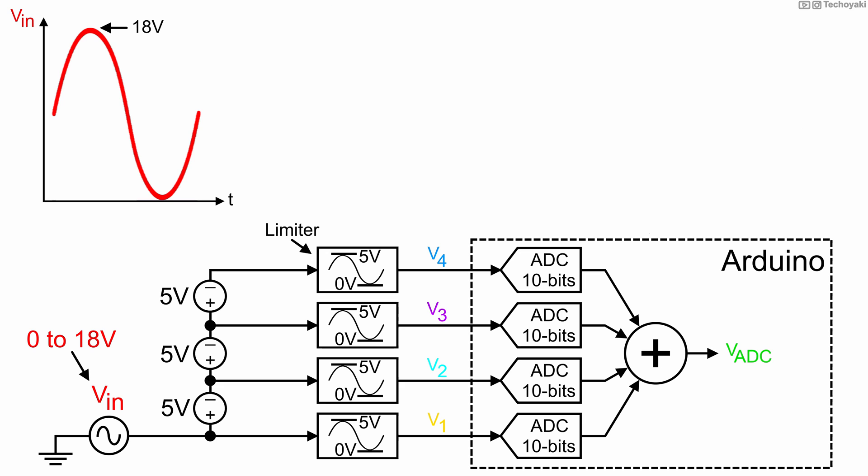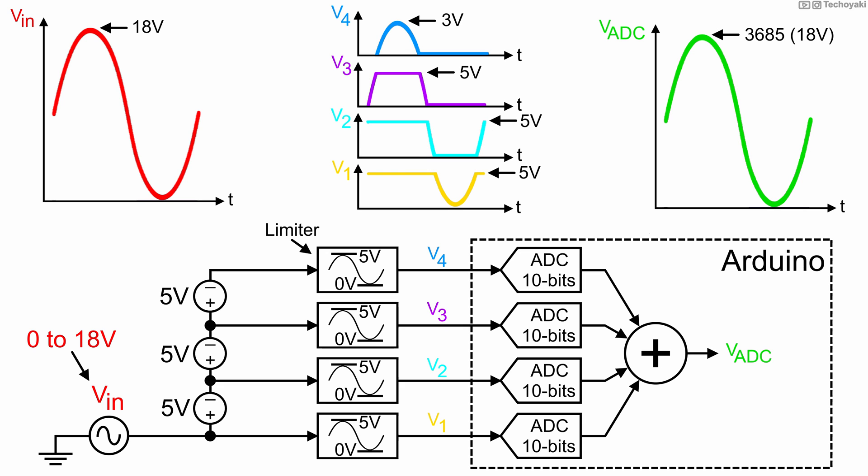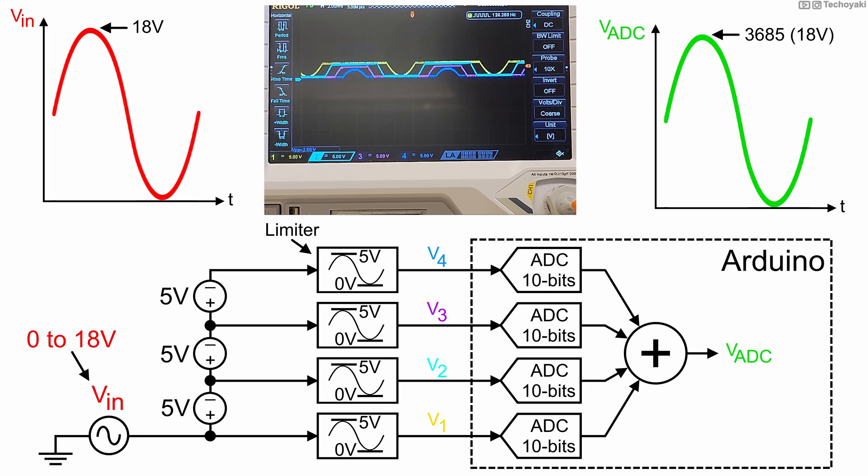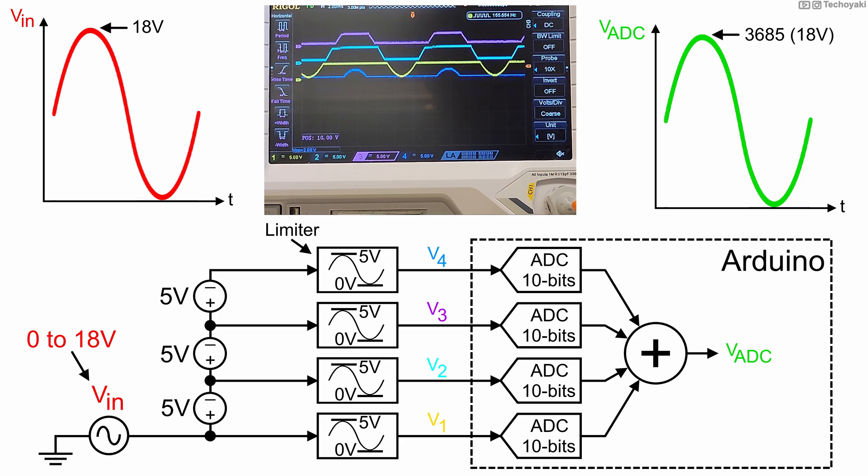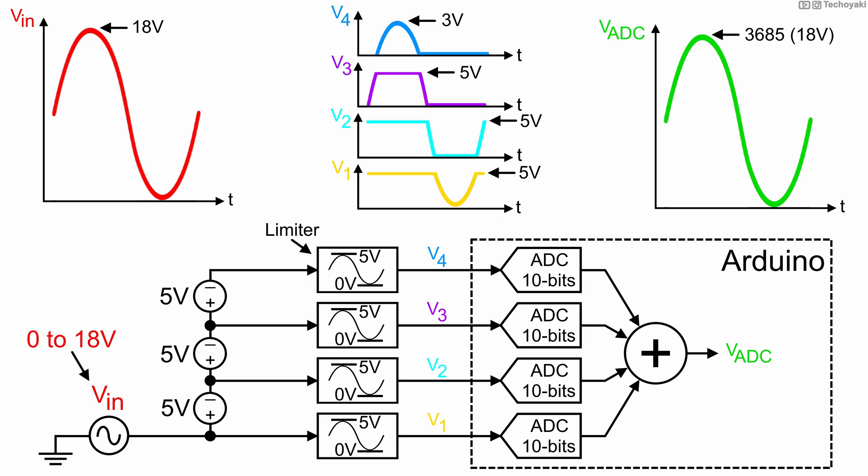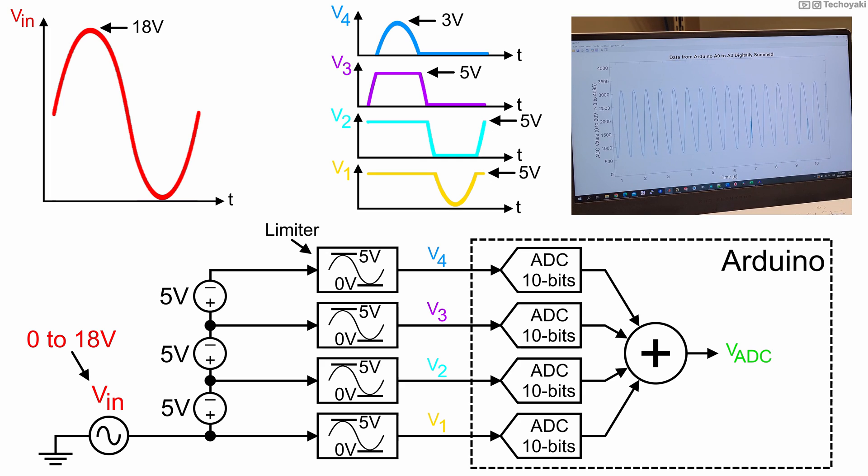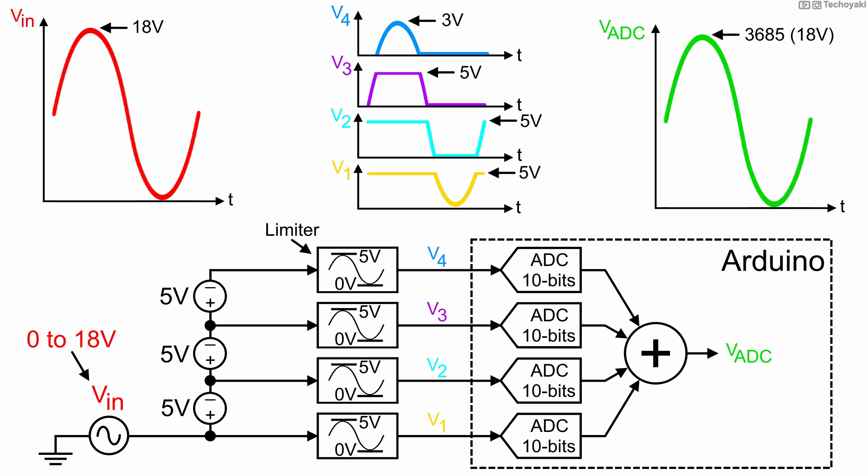However, we see that the limiter only allows the bottom portion of the input signal to go through. This brings us to our second requirements, where we shift the incoming signal with a voltage offset to accept different sections of the 18 volt signal. Once we have these two requirements in place, the Quantizer is able to slice up the signals into manageable 5 volt signals for the Arduino, where the ADCs measuring the different parts of the signal are all added together digitally to reconstruct the original 18 volt signal.